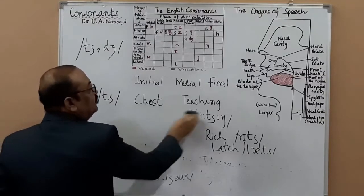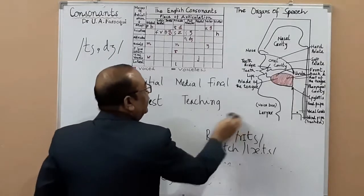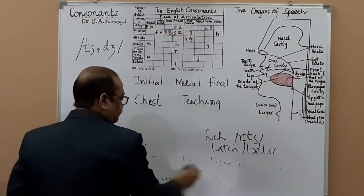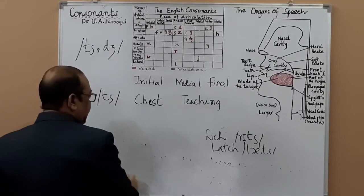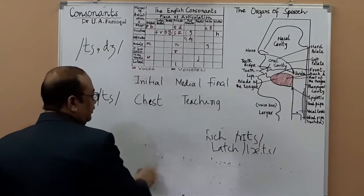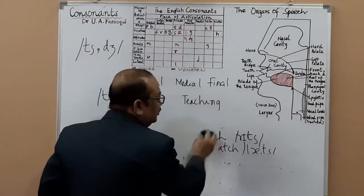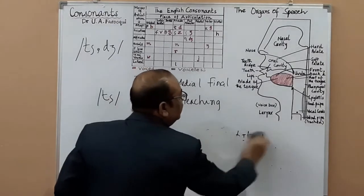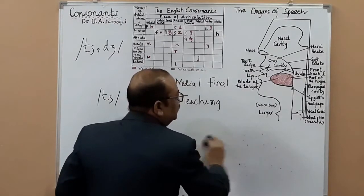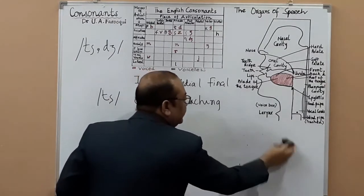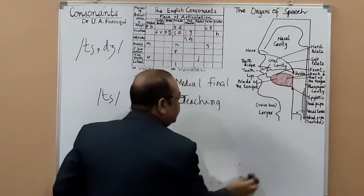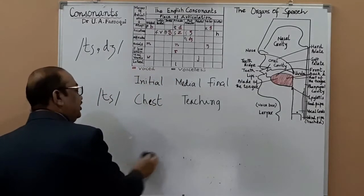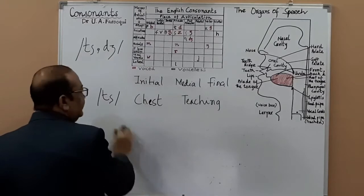Affricates, as I told you, are like plosives — here you have complete closure of air, you keep it inside your mouth, and then you release it gradually. They are also like fricatives because there is friction, but the friction is slow and gradual.